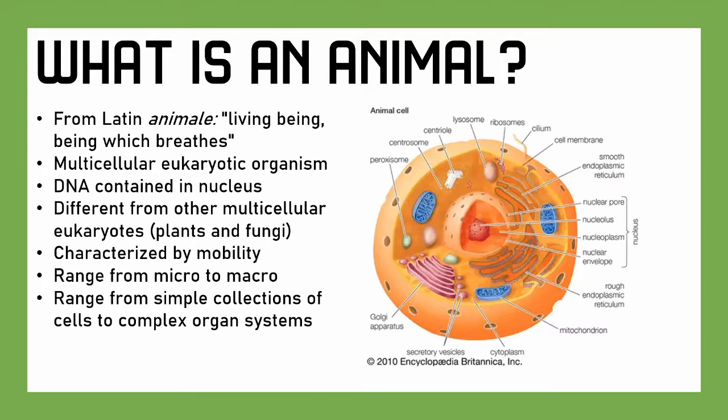Animals can be very diverse. They range from microscopic to macro — some of the largest living things, like whales. They also range from very simple, essentially collections of cells that are loosely organized, things like sponges, to very complex organ systems like we have in our own bodies.